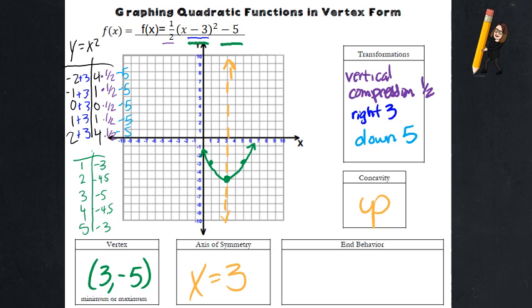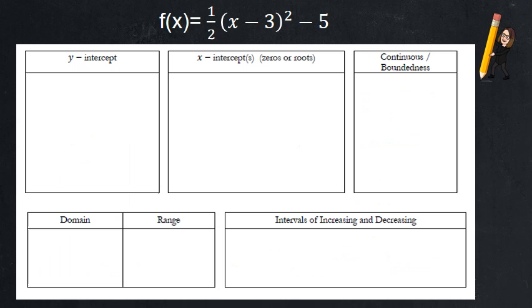The end behavior. This is a little bit new, so this might take some time. We're looking for as x goes to the right and as x goes to the left, what are the y values doing? As x goes to the right to infinity, my y values are going up to infinity. As the x values go left, the y values are still going up because it's a parabola.